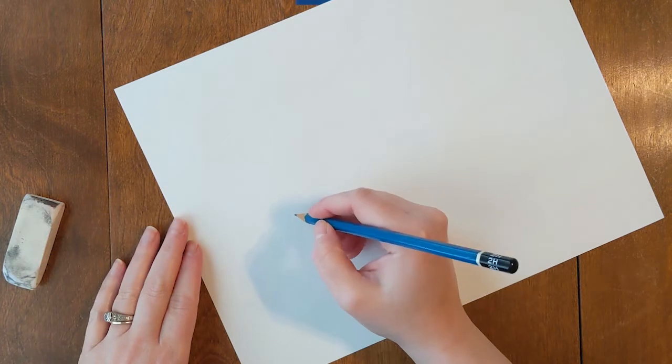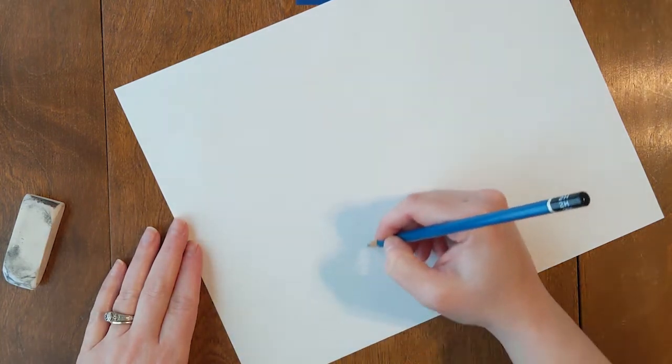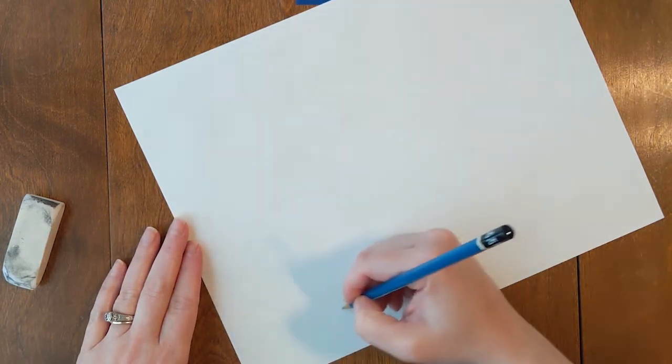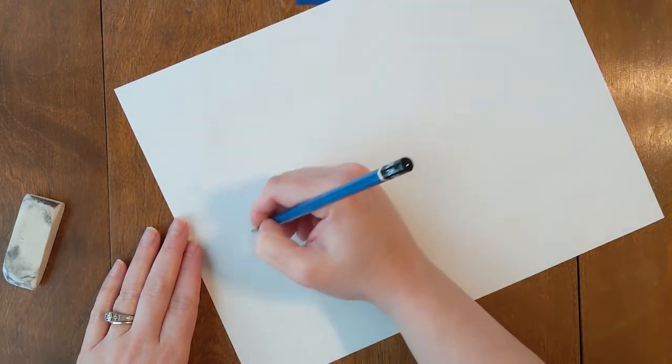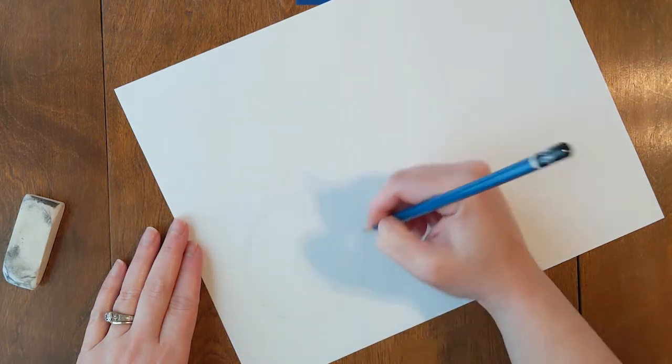So on this paper, I'm going to turn it because that's how I'm comfy drawing my shapes. So if I wanted to start with a sphere, I'm going to do very light lines. And you can see I have lots of lines before I'm sort of satisfied with my circle shape.